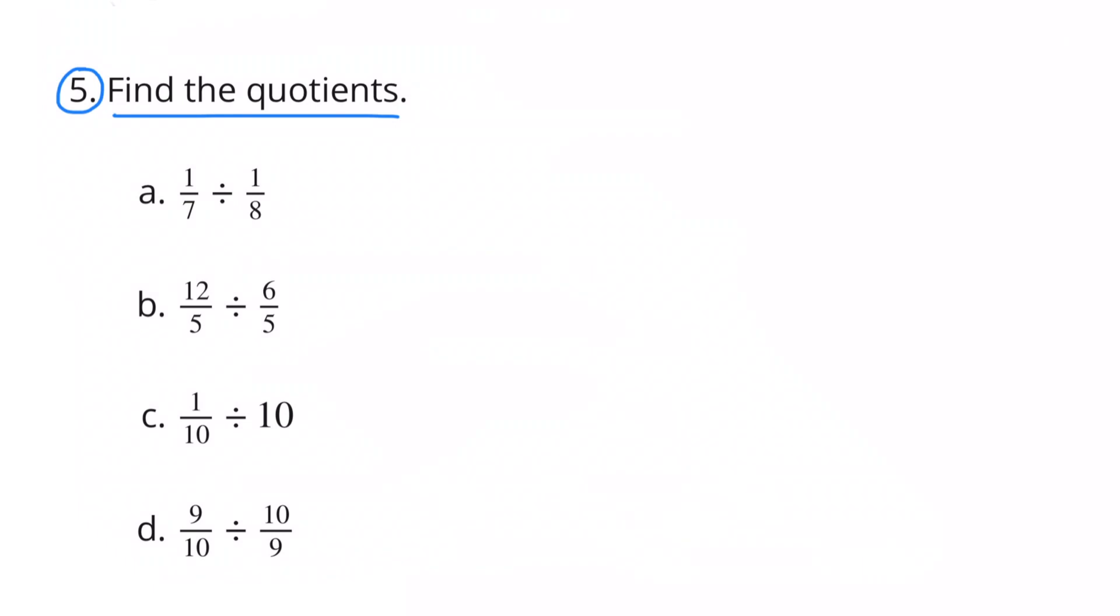Number 5. Find the quotients. 5a. One-seventh divided by one-eighth equals one-seventh times the reciprocal of one-eighth. And one-seventh times eight over one equals eight-sevenths, or one and one-seventh.